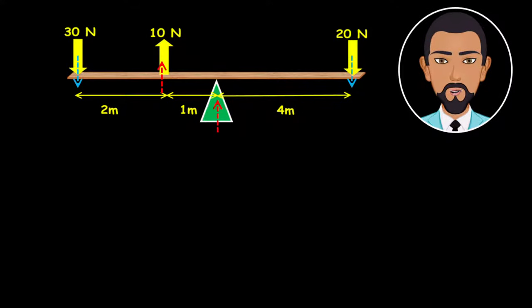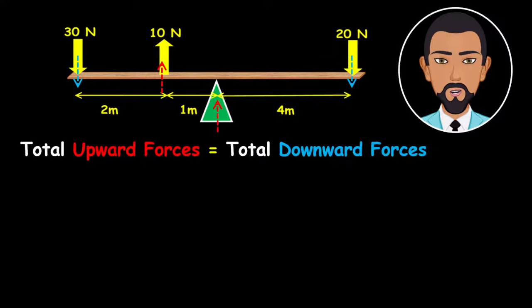Once you have identified the direction of the forces, now we're going to apply a principle of moment. This principle states that the total upward forces is equal to the total downward forces. This is true when the system is balanced.